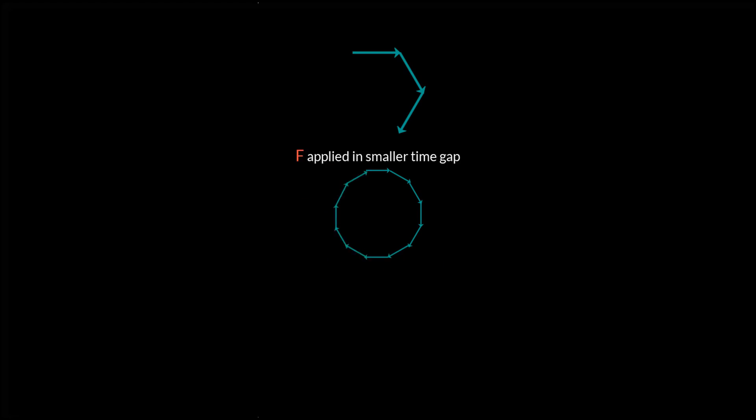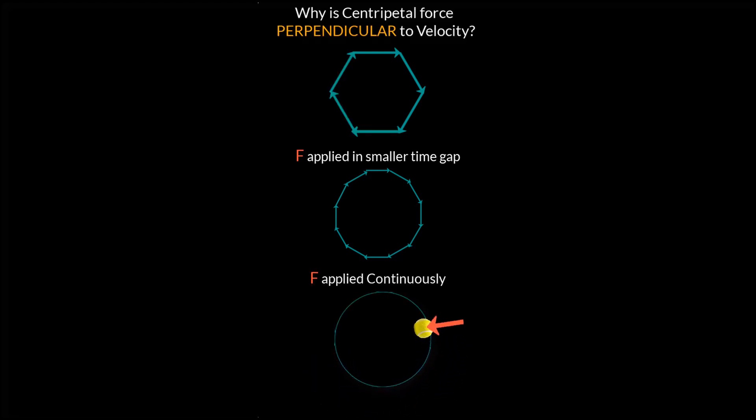And if the time interval becomes infinitesimally small, this ball starts undergoing uniform circular motion due to this centripetal force. So what we learned is that if an object is continuously acted upon by a force that is perpendicular to its velocity, the object will start moving in a circle and this force that causes circular motion is called the centripetal force.